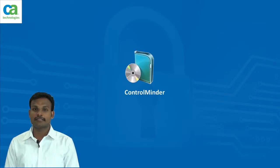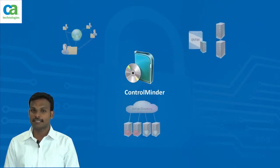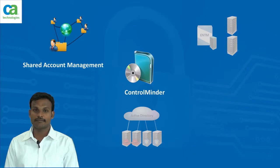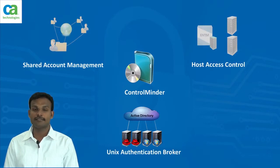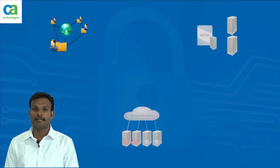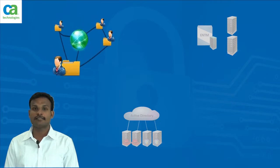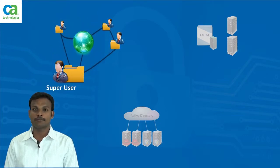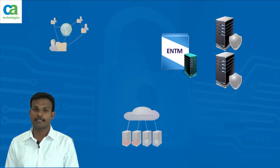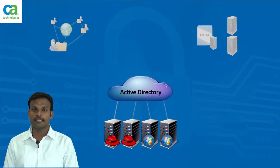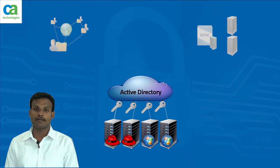CA Control Minder offers three major capabilities in the security space: Shared Account Management, Host Access Control, and Unix Authentication Broker. Shared Account Management is the controlling of super user access, while Host Access Control deals with fine-grained access control mechanisms, and Unix Authentication Broker gives the advantage of leveraging Active Directory for authentication purposes to all Unix machines.